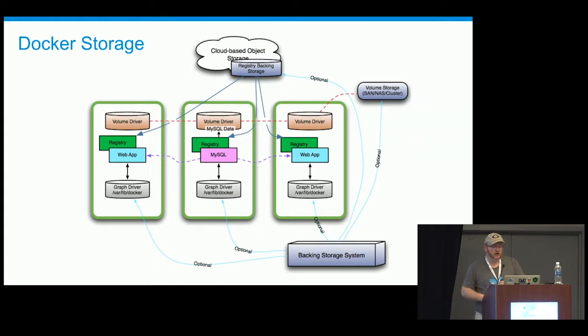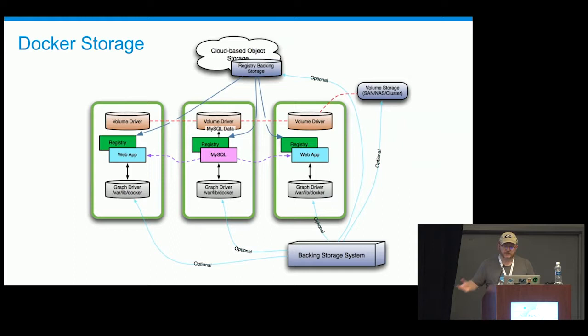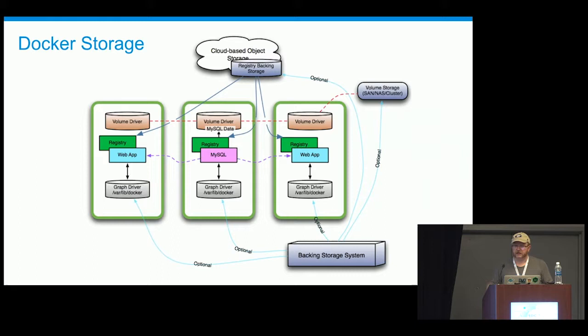This diagram I'll be referring to several times during the talk. It gives you an idea of what a Docker cluster with a bunch of different storage systems plugged in looks like. Inside the green boxes are your actual Docker hosts. You've got a volume driver and a graph driver running inside each host as a subsystem. The registry is actually, assuming you're running Docker Trusted Registry, running as a container itself. So the rectangular boxes in there are running containers — Docker registry is actually just a series of containers, its own application running inside your Docker host.